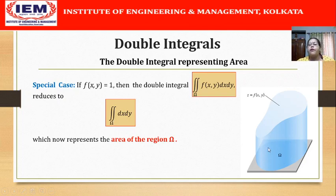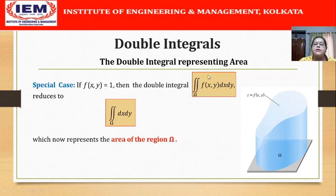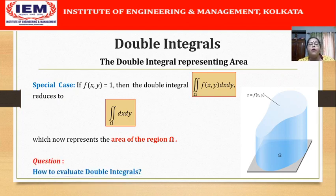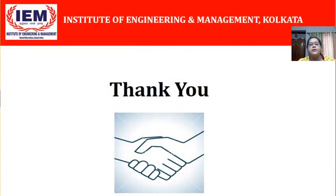These are two very important facts to be remembered for the entire module: the double integral represents volume of a cylindrical solid with base omega and top surface z = f(x,y), and in the special case it gives the area of the base region. We will see several applications and problems using these concepts. But before that, the next important question is how do we evaluate these double integrals — and this will be taken up in the next lecture. Goodbye till then, thank you.